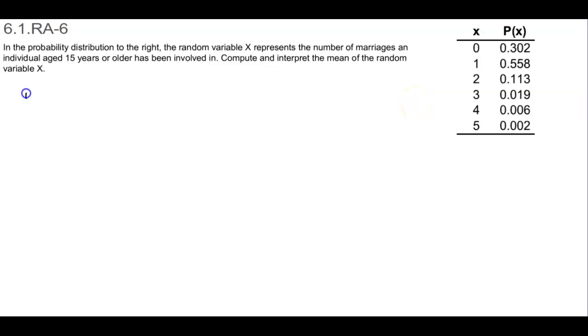The mean of a discrete random variable is given by the following formula. We have mu subscript x, which is going to equal the sum of x times the probability of x, where x is the value of the random variable and P(x) is the probability of observing the value. Here is the value of x and this is the column for the probability of x.